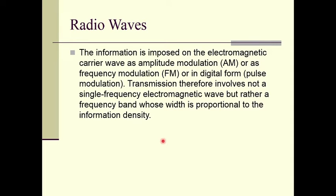The information is imposed on the electromagnetic carrier waves as amplitude modulation, frequency modulation, or in digital form as pulse modulation. Transmission involves not a single frequency but rather a frequency band whose width is proportional to the information density. We know amplitude modulation and frequency modulation in terms of radio communication — radio sets have AM and FM bands.